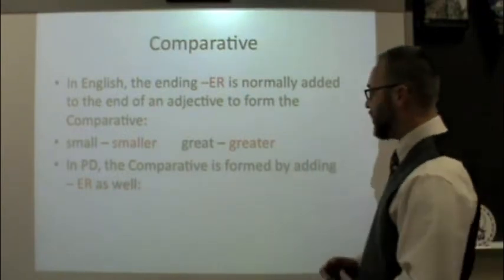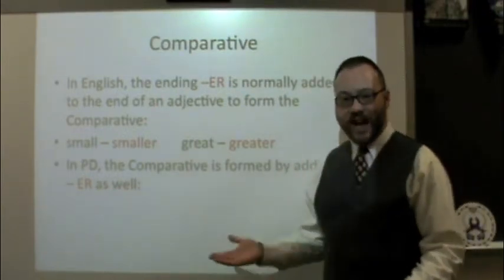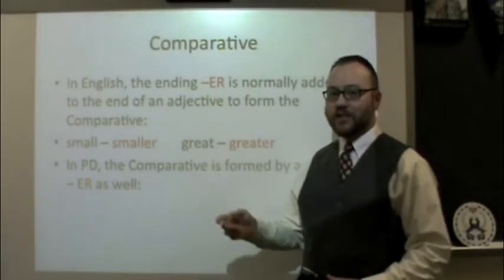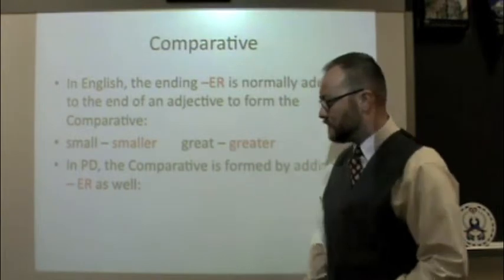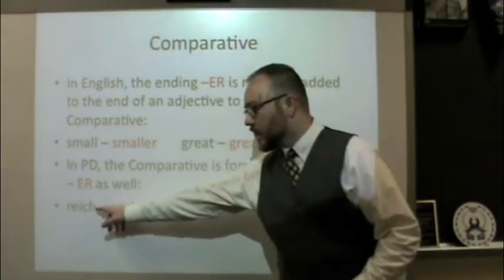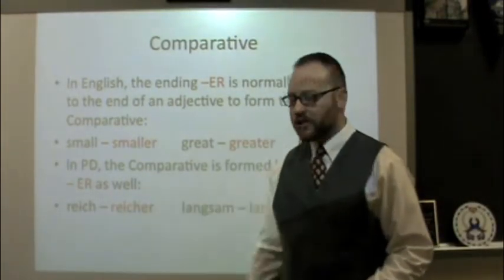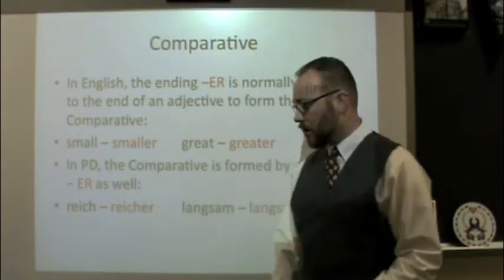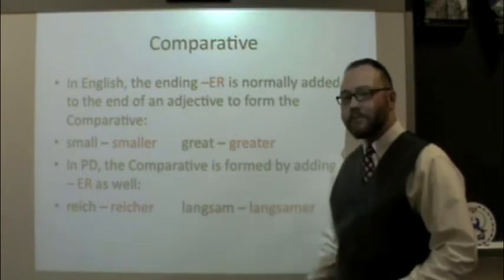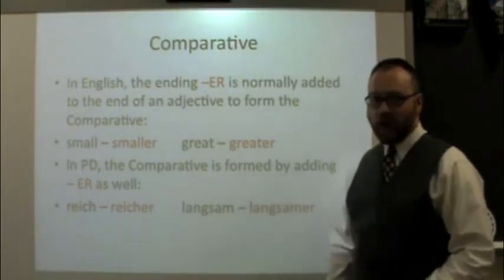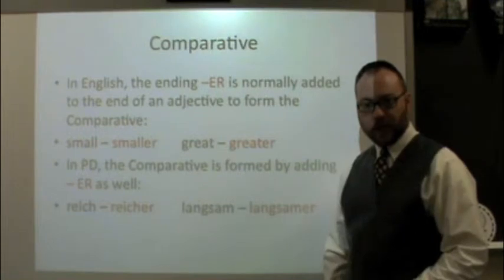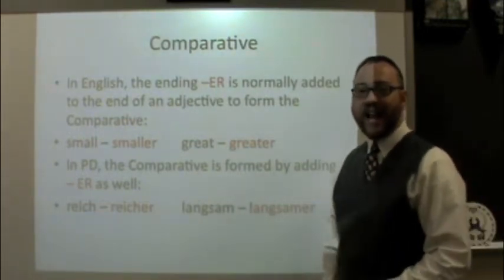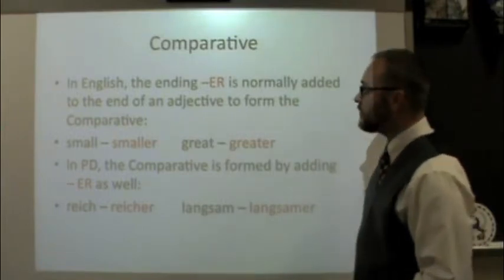In Pennsylvania Dutch the comparative form is done the exact same way as in English, so that's easy. You already know how to do it. Add -er. For example, rich becomes richer — we just added an -er. Same way with langsam, meaning slow, becomes langsamer, slower. So in Pennsylvania Dutch the comparative is really easy — just add an -er to the end of the adjective.